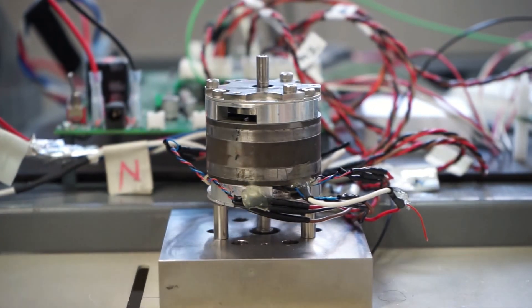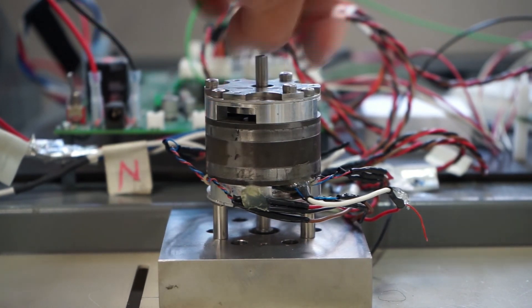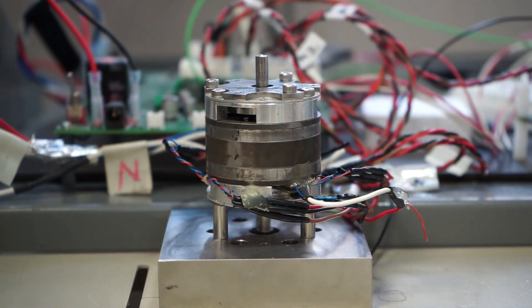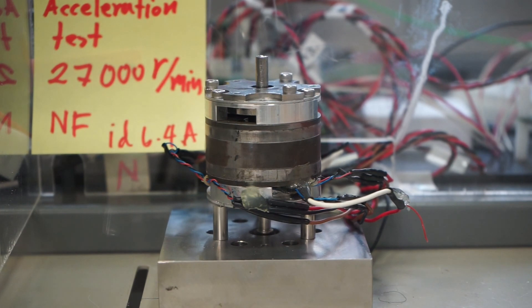Now, let us see the motor in action. First we turn on the levitation control. Next, we start rotating the machine. If not for the noise, it would be very hard to notice that the rotor is even moving.